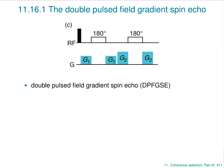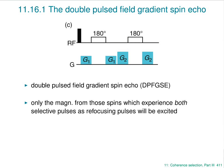If one spin echo is good, perhaps two would be better. This is called the double pulsed field gradient spin echo — quite a mouthful. It basically does the same thing twice, and only the magnetization which experiences both the first and second selective refocusing pulses will be refocused by the gradients.